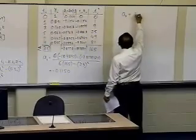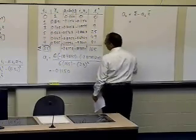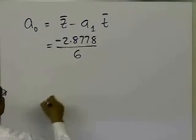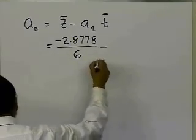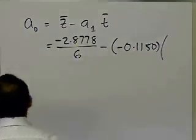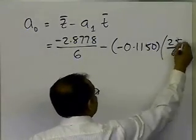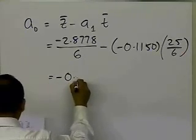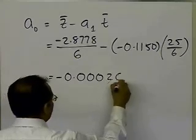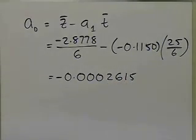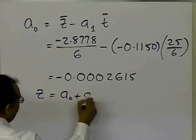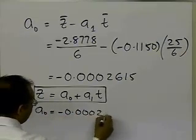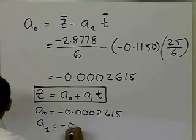Similarly, a0 = z̄ − a1·t̄ = (−2.8778/6) − (−0.1150)·(25/6), where −2.8778 is the summation of zi and 25 is the summation of ti, each divided by 6. This gives a0 = −0.0002615. So for the transformed data, z = a0 + a1·t with a0 = −0.0002615 and a1 = −0.1150.